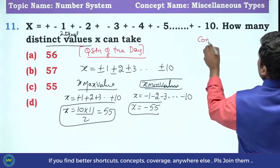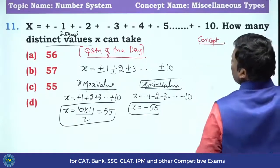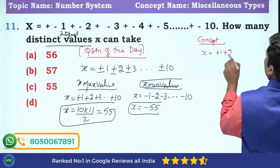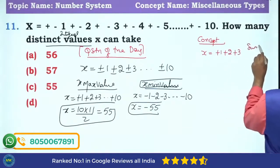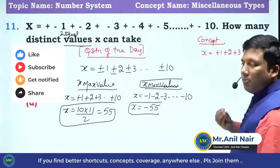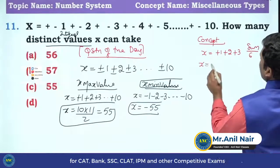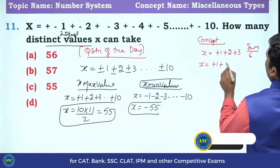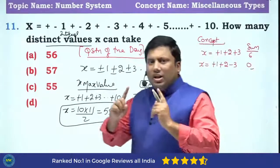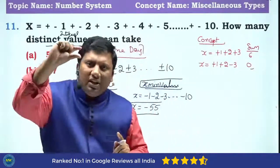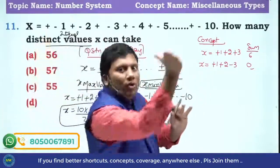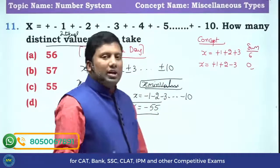Listen carefully — this is the key concept. Suppose there are three numbers: plus 1, plus 2, plus 3. Their sum is 6. Now if I replace plus 3 with minus 3, the sum becomes 1 + 2 − 3 = 0. Think logically: if a plus sign is replaced by a minus sign, the net drop will be 2 times that number.